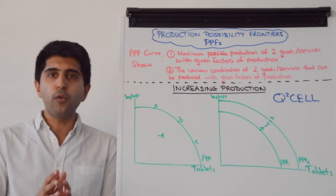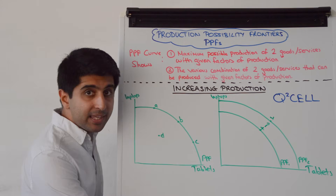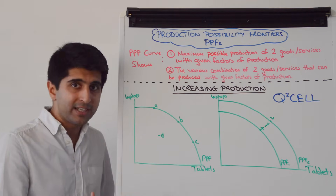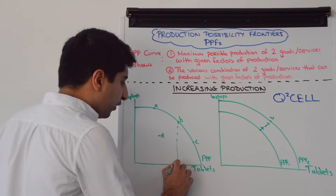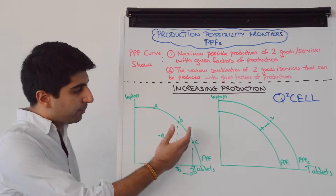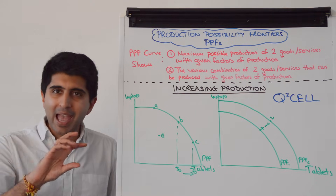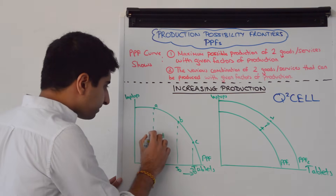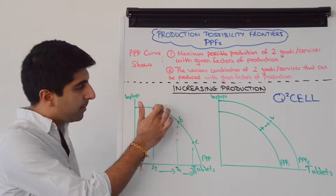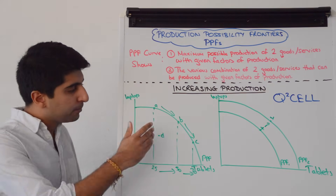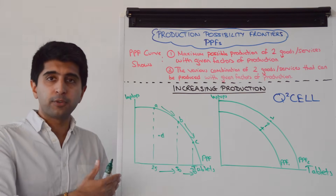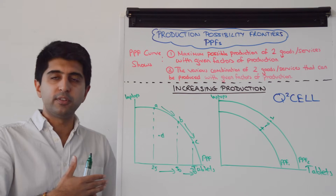But if a business is already on the curve — already productively efficient — what could they do? They could reallocate their factors of production to specialise more in tablet production. Maybe they were producing 50 units of tablets at point B; to get to 70 units they could move factors of production away from laptops and towards tablets instead — moving workers and machines away from producing laptops towards producing tablets, moving along the PPF from A to B to C.